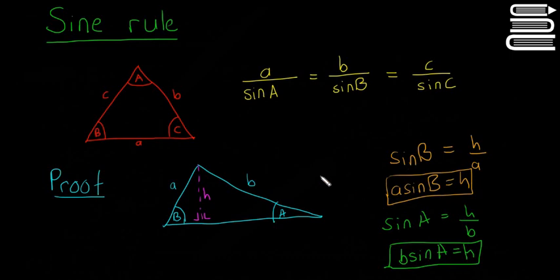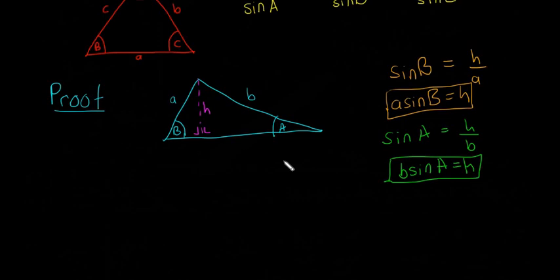So we have two things here. The next thing I'm going to do is scroll down a bit. Obviously, h is equal to h because it's the same side. That's like saying 1 is equal to 1. We see h is equal to this and h is equal to this. So that means they have to be equal to each other as well. So that means a·sin(B) = b·sin(A).